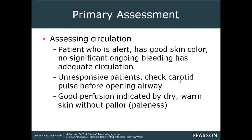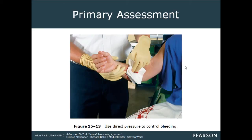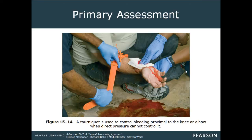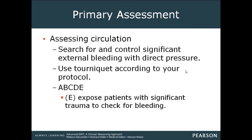When you assess circulation, an alert patient with good skin color and no significant ongoing bleeding has adequate circulation. For unresponsive patients, check the carotid pulse. Good perfusion is indicated by dry, warm skin without pallor. Use direct pressure to control bleeding, or apply a tourniquet if you cannot control bleeding proximal to the knee or elbow, according to your protocol. Add E to your mnemonic — expose patients with significant trauma to check for bleeding and make sure you don't miss any injury.